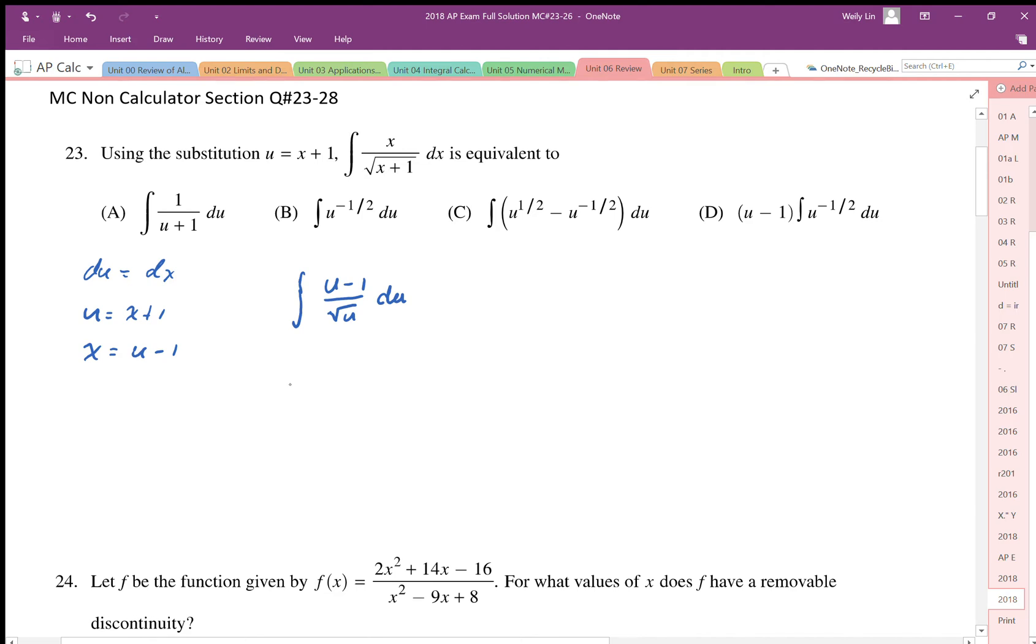And we can simplify this expression. u divided by root u is square root u, minus 1 divided by root u is going to be u to the negative one-half. And looking at the answers here, we should rewrite this one here as u to the positive one-half. And then we have our du.